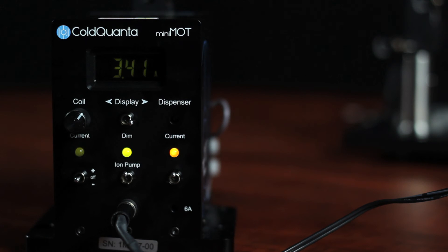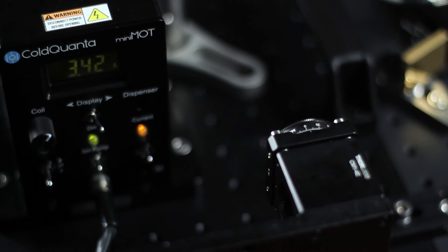The light above the ion pump switch is green when the pressure is sufficiently low, and red when the pressure is too high. If the light is red, turn off the dispenser, but leave the ion pump on until the light is green again. Call cold quanta if the light is red for more than 30 seconds after turning off the dispenser.